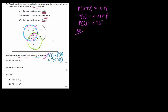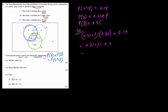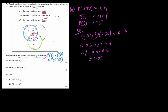So let's use the rule of independent events. Probability of S, which is 0.31 plus P, multiplied by probability of D, which is 0.35, equals S intersection D, which is 0.14. Therefore, 0.31 plus P equals 0.14 divided by 0.35, which turns out to be 0.4. Therefore, P equals 0.4 minus 0.31, and that is 0.09. So that is the probability P.